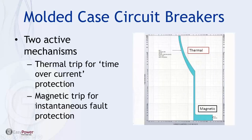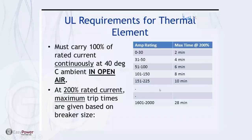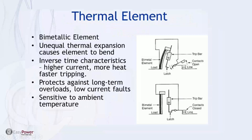In the case of molded case circuit breakers, we have two active mechanisms sensitive to overcurrent. First is a thermal element — a bimetallic strip that at a given current will bend enough to interrupt the connection. Then a magnetic trip, which acts as instantaneous fault protection. UL requires that the thermal element must carry 100% of rated current continuously at 40°C in open air, and 200% of the rated current at the trip times given for the breaker size.